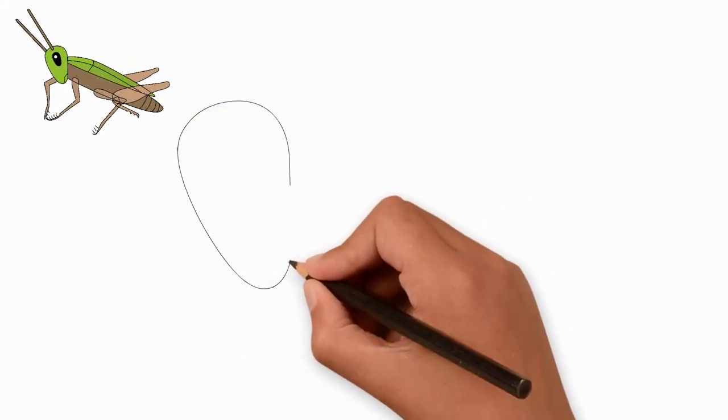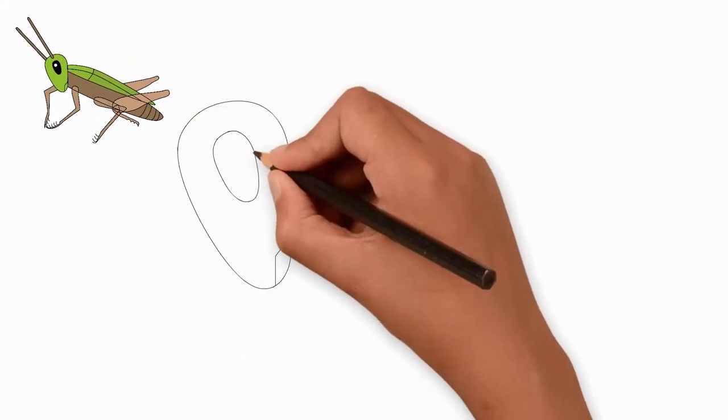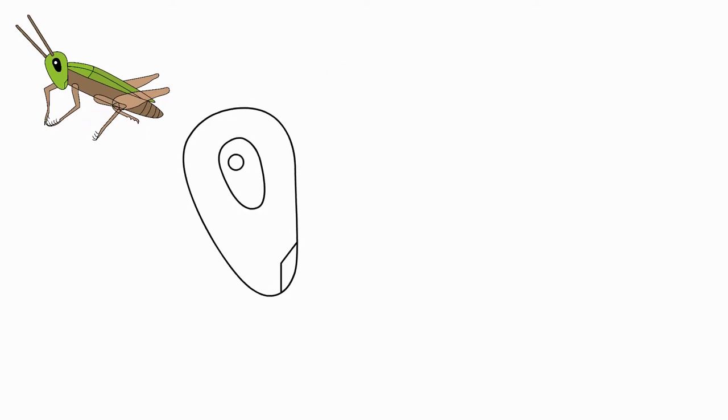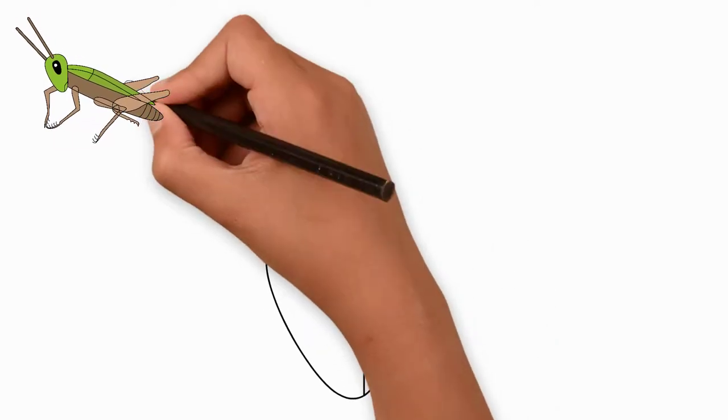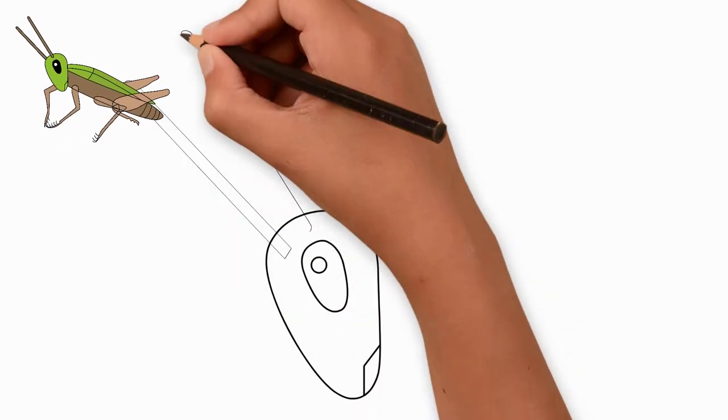How to Simply Draw a Grasshopper. Today we will learn to draw a grasshopper. First, draw the head of a grasshopper. It is an oval similar to a triangle with rounded edges.